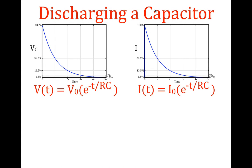We're talking about discharging a capacitor with respect to time. You can see this is a graph of the voltage across the capacitor and the current through the circuit with respect to time. The first thing I want you to notice is that the time axis is not given in absolute time like 30 seconds or 2 minutes. The time is given in time constants. This symbol tau is the symbol for the time constant — 1, 2, 3, 4, 5 time constants, the same for the current graph.